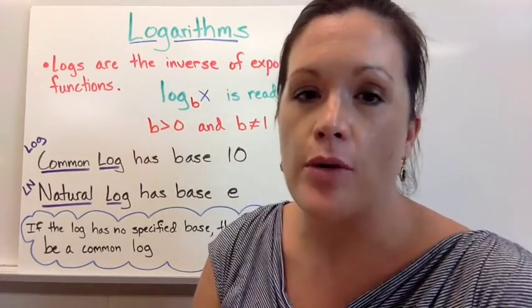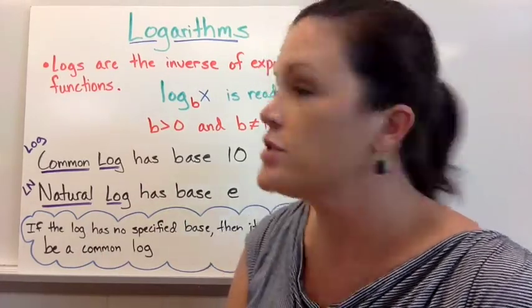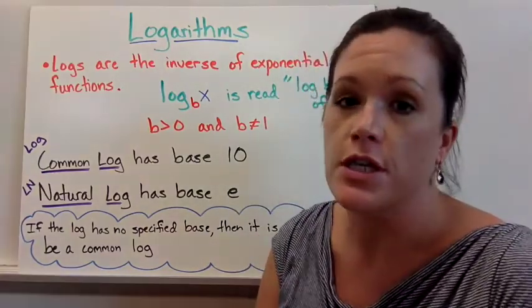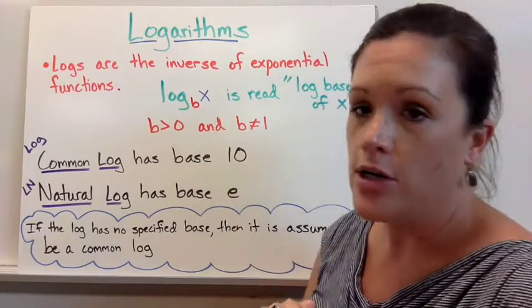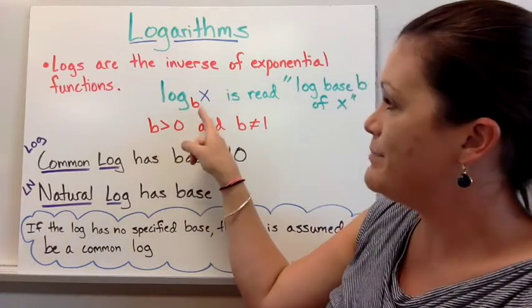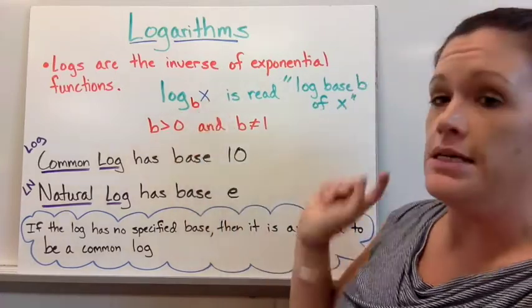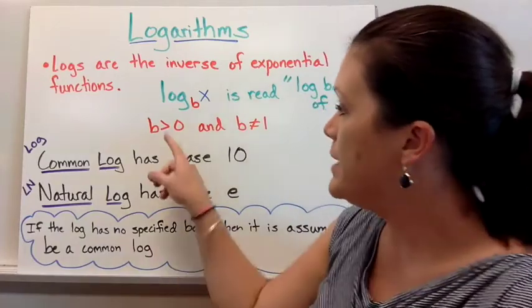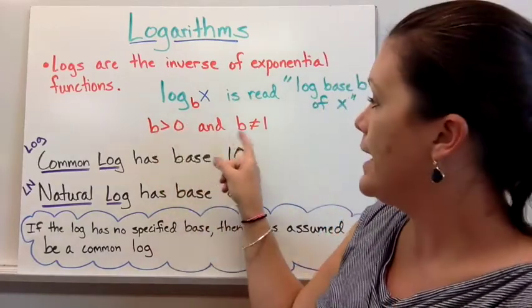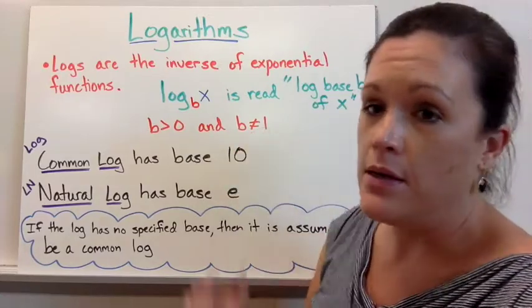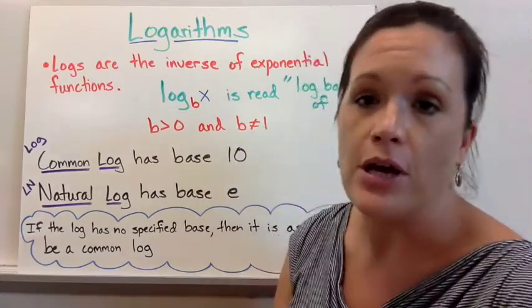Let's talk about some basics of logarithms. Logs are the inverse of exponential functions. The way we write them looks like this basic example: log base b of x. Where b as our base has to be greater than 0, so it has to be positive, and it's not equal to 1. It can be about anything else other than that.